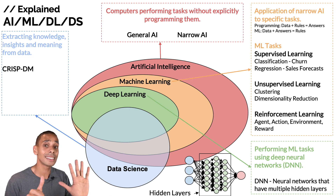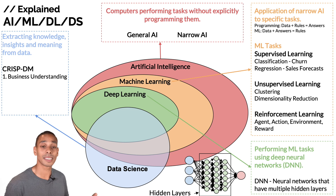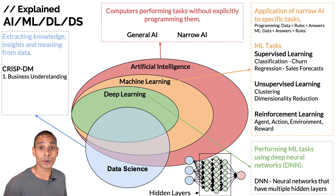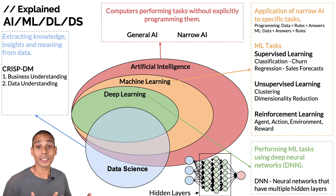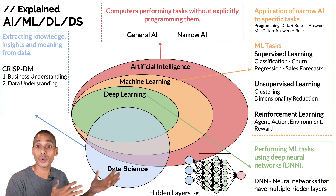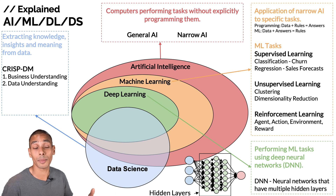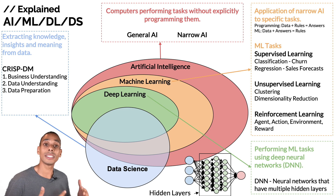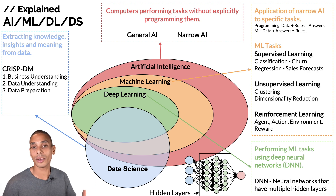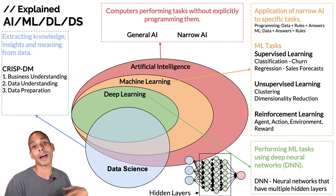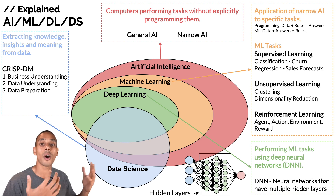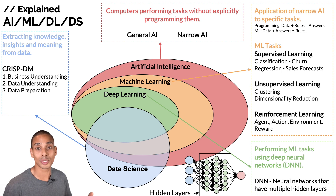There are six key steps in the data science process. First, business understanding: understanding the business you're working with and the environment in which they operate. Second, data understanding: understanding the data you have on hand — whether there are missing values, visualizing that data, and looking at summary statistics. Third, data preparation: getting your data ready for modeling, which may include feature engineering, creating new columns, filling in missing values, and splitting data into training and testing sets.